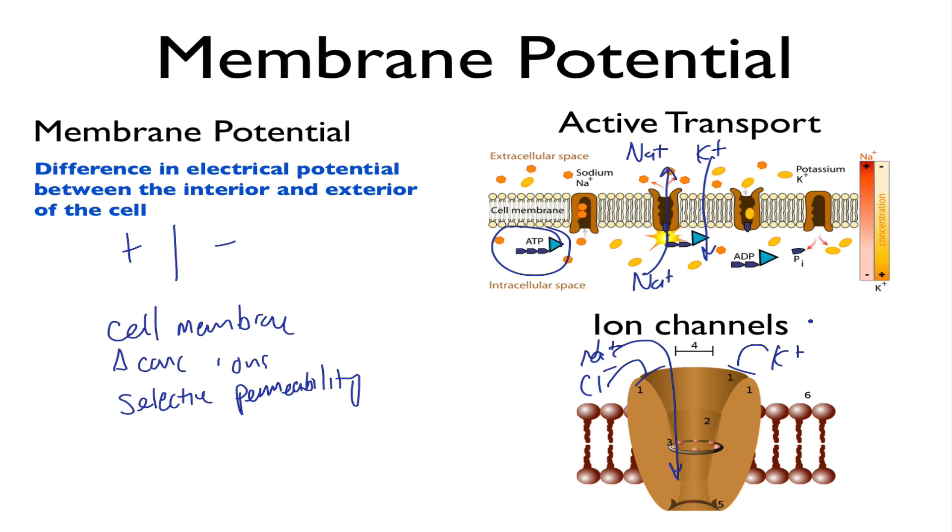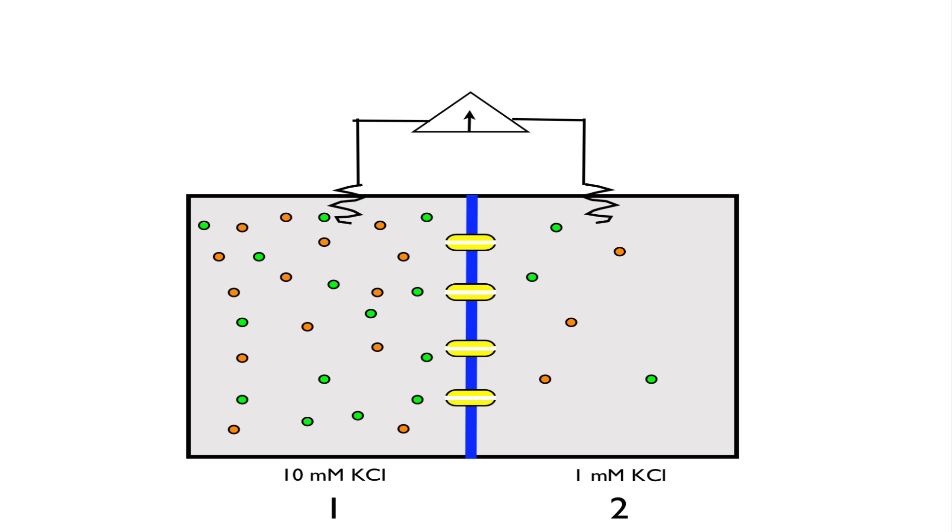So together, these three things, a membrane, active transporters, and ion channels, enable the creation of a membrane potential. So let's now consider how this process actually proceeds.